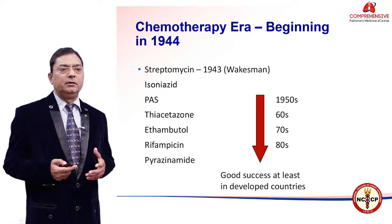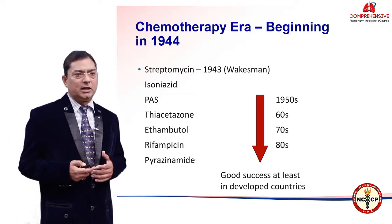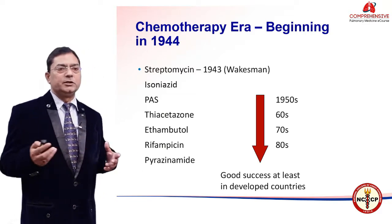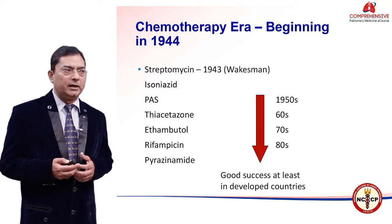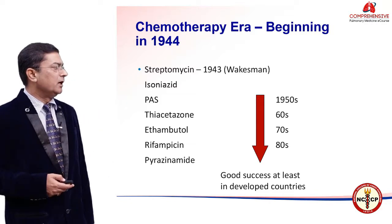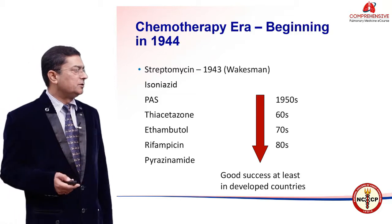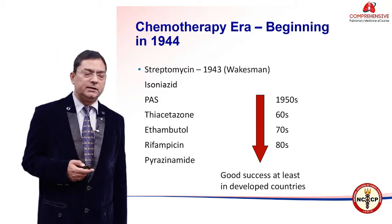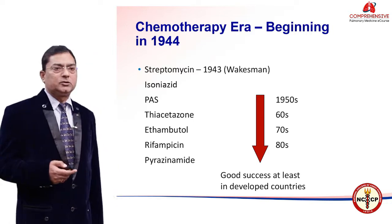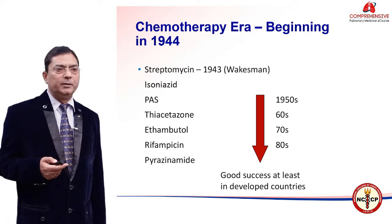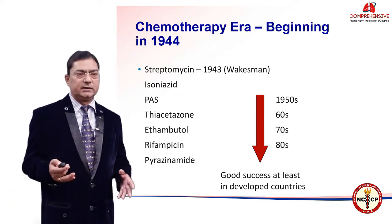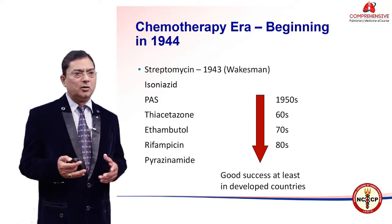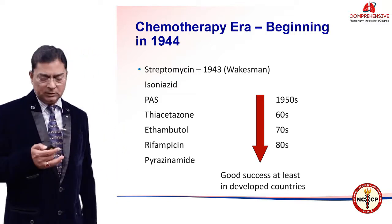Then began the chemotherapy era when new drugs came into existence for treating tuberculosis. This story started in 1944, and since then we have had many drugs, from streptomycin to pyrazinamide. We achieved good success at least in developed countries, and tuberculosis was thought to be a controllable disease by 1960. WHO also believed it was no longer a global problem.